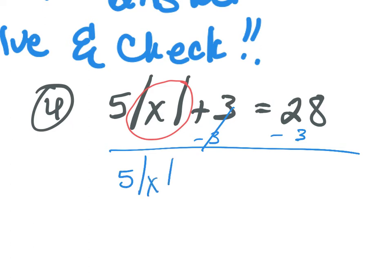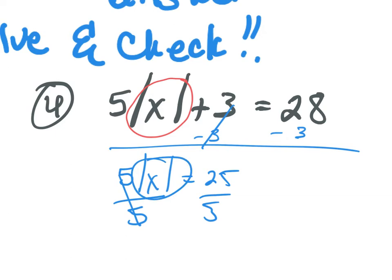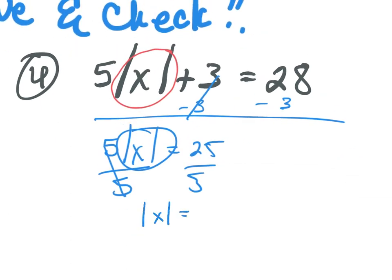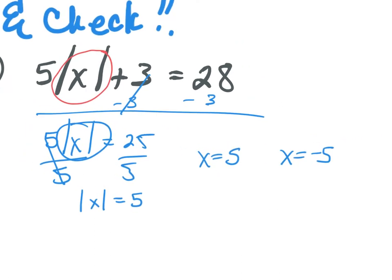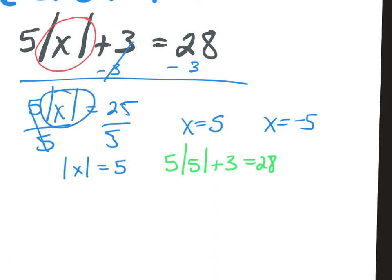Now my absolute value is isolated, so I can form my two equations: x equals 5 and x equals negative 5. I must plug them back in to make sure they work. So I have 5 times the absolute value of 5 plus 3 equals 28: 5 times 5 is 25, plus 3 gives 28. Does 28 equal 28? Yes. Same thing: 5 times the absolute value of negative 5 plus 3 — 5 times 5 is 25, plus 3 is 28. Both solutions work.